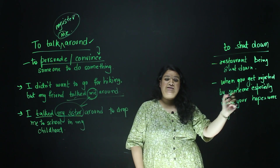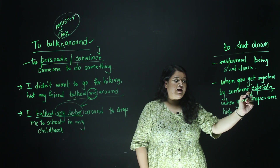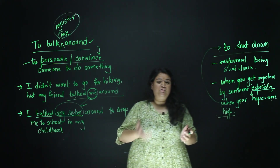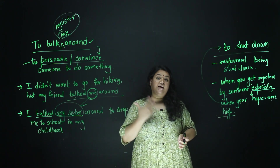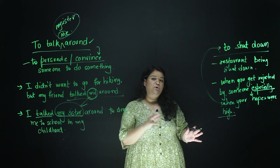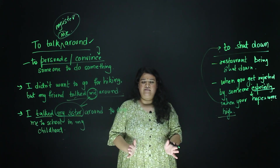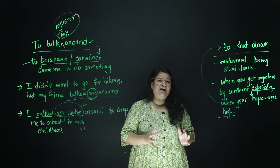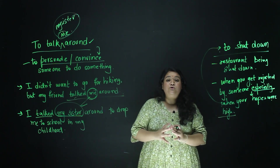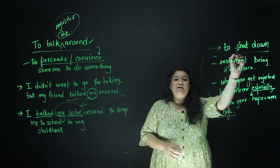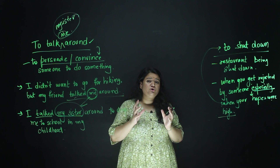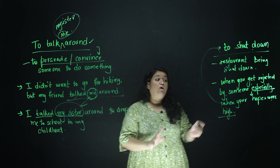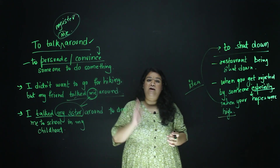When you get rejected by someone, and your hopes were really high, you can use this phrasal verb. Imagine you are talking to your boss and telling him or her an idea for a new project, but they stop you mid-sentence — that's very rude. You can say: 'I was talking about an idea to my manager but he shut me down mid-sentence.' This means he not only stopped you but also rejected your idea entirely.